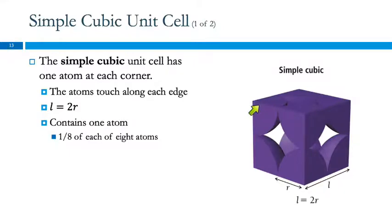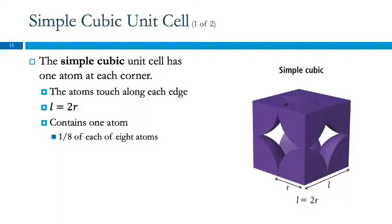In this simple cubic cell, the atoms touch along the sides of the cube. If we use R to indicate the radius of an atom, then the edge length is 2R — here's one radius and another. Each of the corners is one-eighth of an atom. There are eight corners, so eight times one-eighth gives a total of one atom. It's parts of eight different atoms, but if we took this apart and put the pieces together, they'd make one sphere.